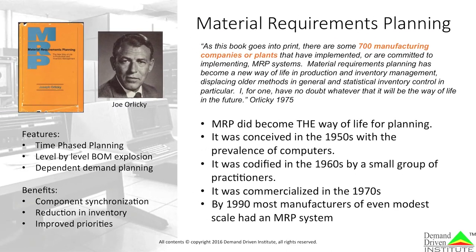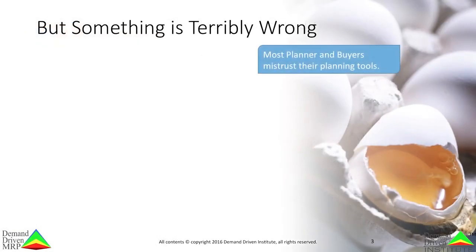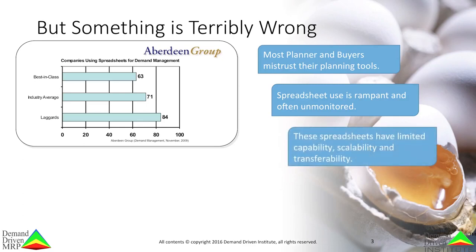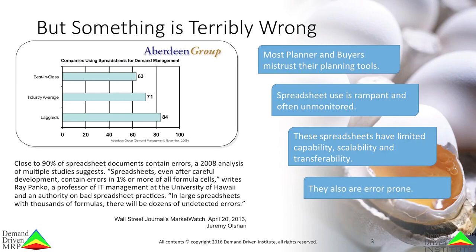Today, almost every supply chain is dominated by MRP systems conveying signals up and down the chain to each other. But something is terribly wrong. The people that use MRP systems don't trust them. The use of spreadsheets to work around MRP calculations is rampant. Several studies have shown that on average, 70% of companies admit to using spreadsheets to augment or supplant the MRP planning equations, despite them having limited capability, scalability, and transferability. They are also error-prone, with nearly 90% of spreadsheets containing some form of error.